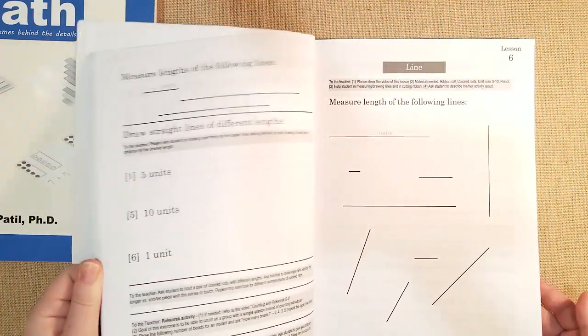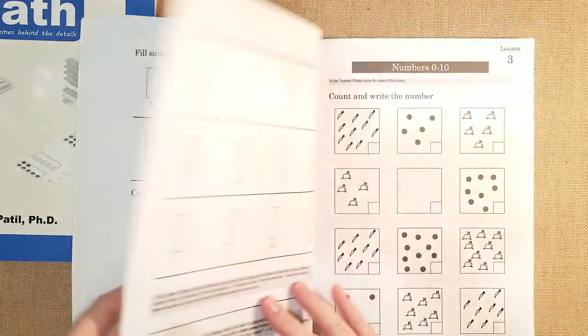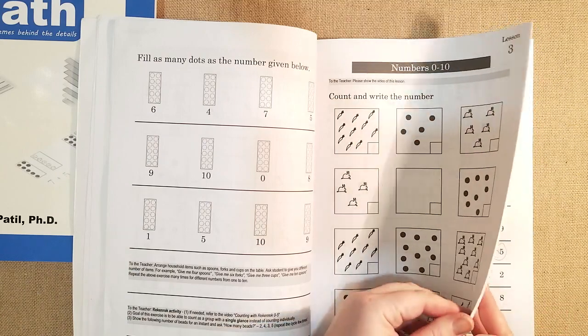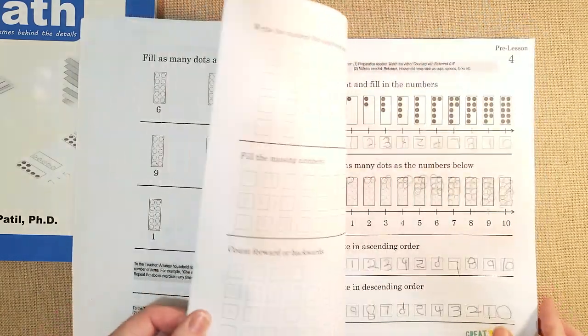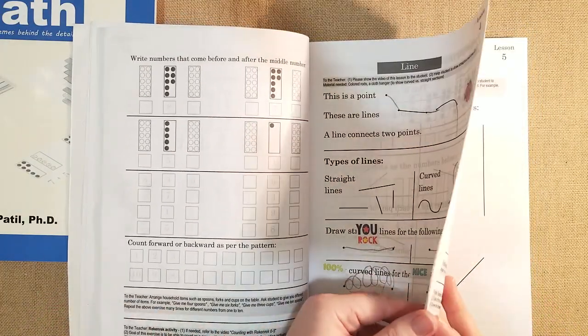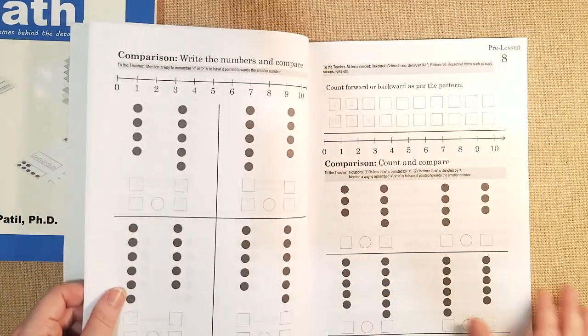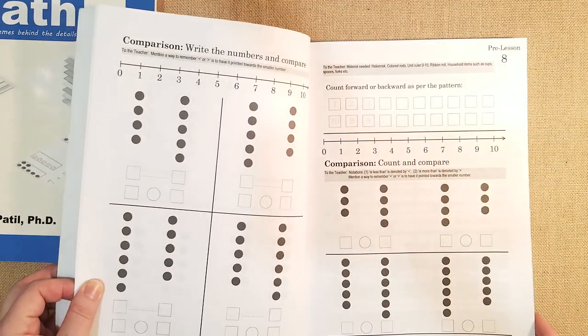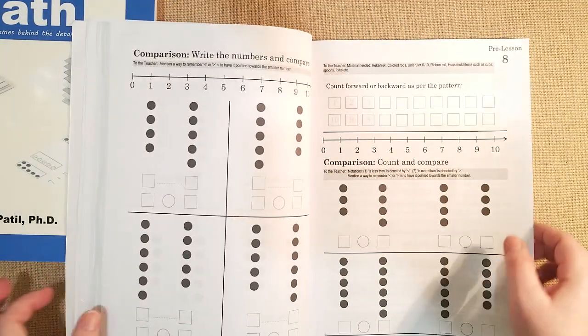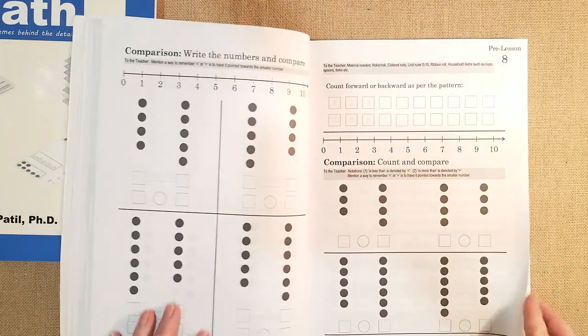So here the pre-lessons are very easy. They're just counting and writing numbers and getting familiar with numbers. Now this is just a review from things that they learned in probably preschool or kindergarten. And they're introducing lines and what a line means, filling in numbers. So it's pretty easy in the beginning, counting forwards and backwards as per the pattern and they show a number line. They're getting them familiar with using it with their addition.